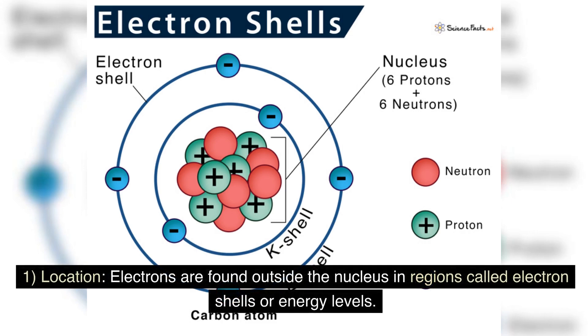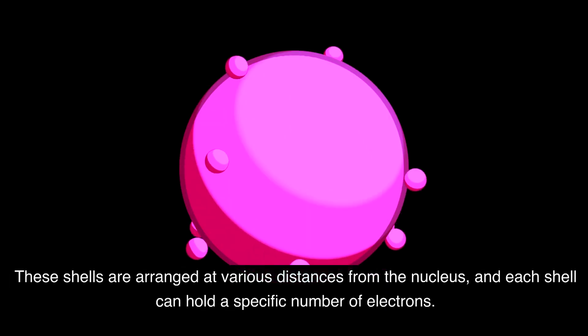Location: electrons are found outside the nucleus in regions called electron shells, or energy levels. These shells are arranged at various distances from the nucleus, and each shell can hold a specific number of electrons.